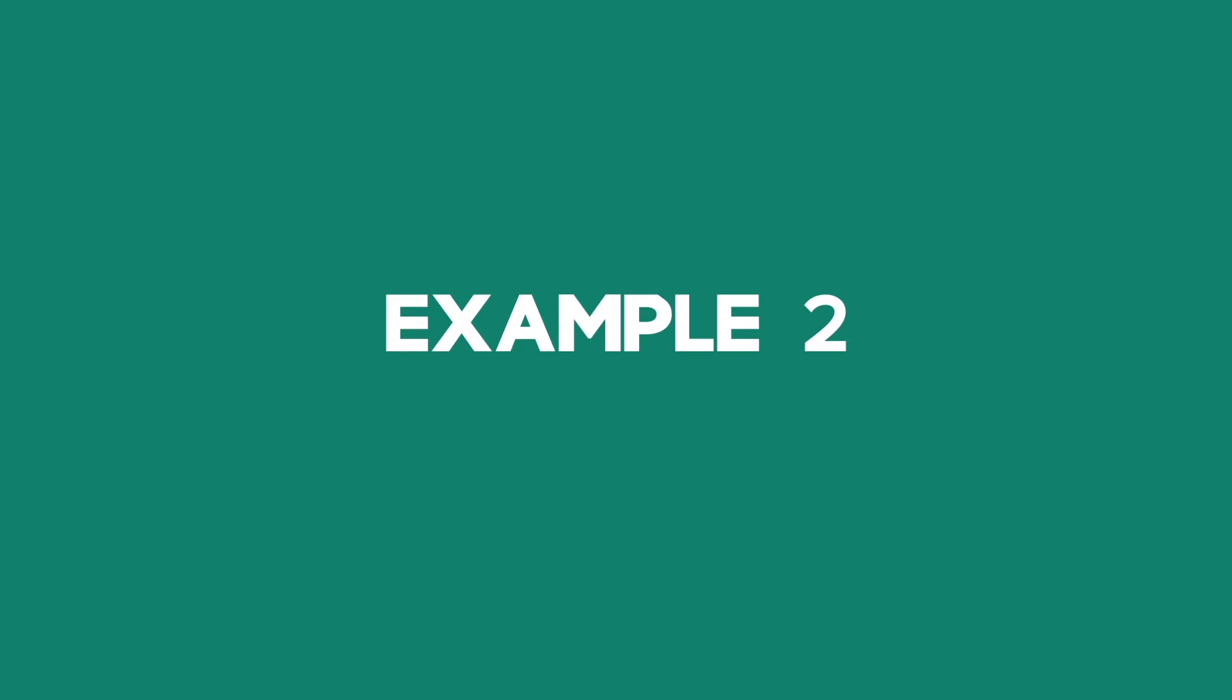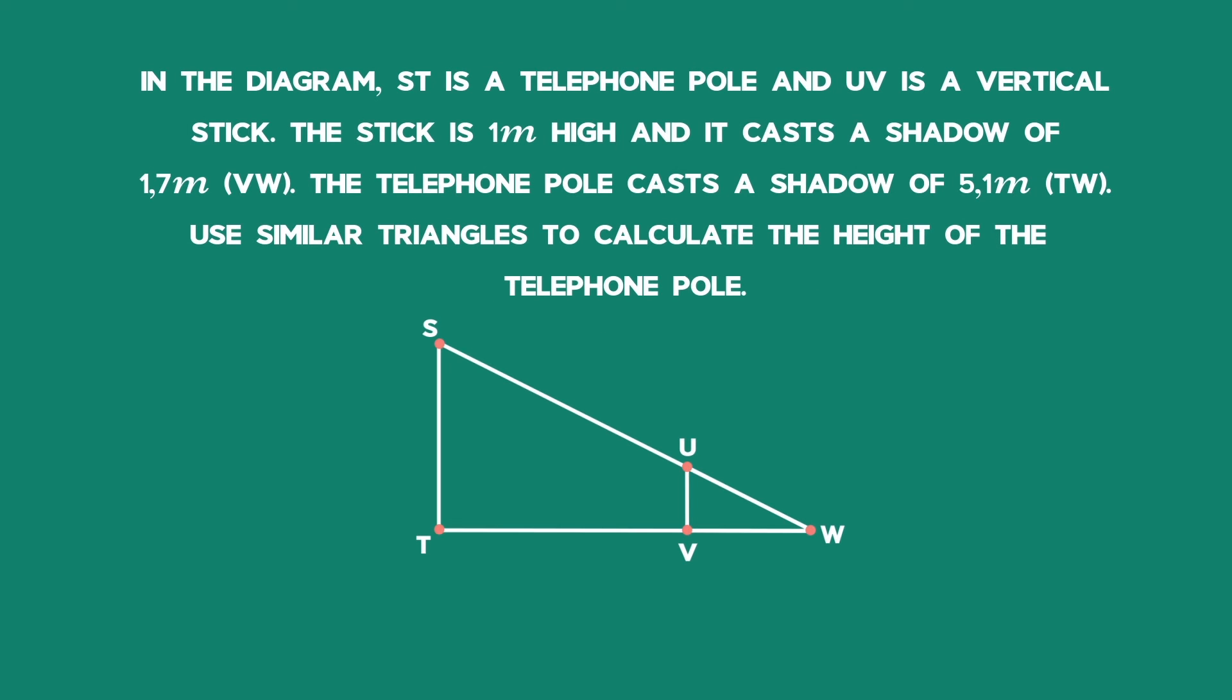Example 2. In the diagram, ST is a telephone pole and UV is a vertical stick. The stick is 1 meter high and it casts a shadow of 1.7 meters, VW. The telephone pole casts a shadow of 5.1 meters, TW. Use the similar triangles to calculate the height of the telephone pole.